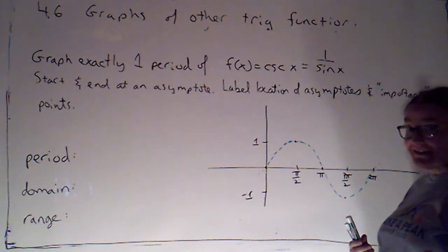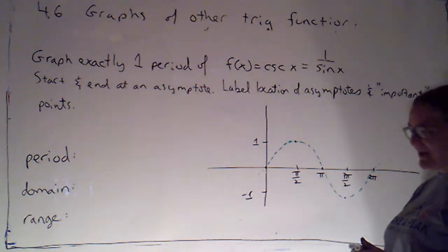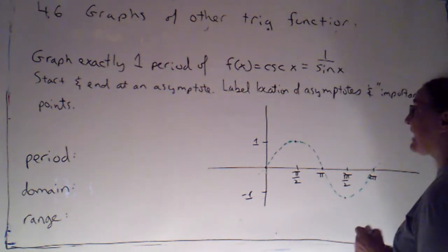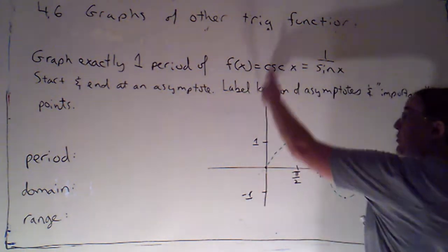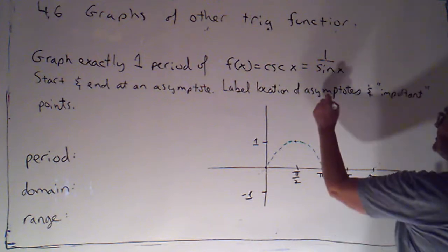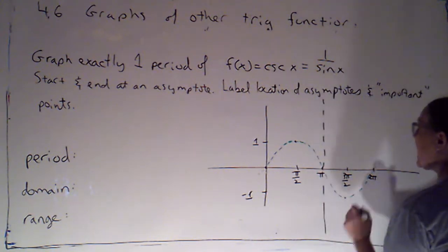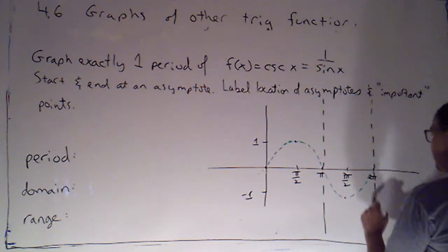And of course where sine is zero is where cosecant is going to be undefined and that's where we're going to have our asymptotes. So the y-axis will be an asymptote, we'll have an asymptote at pi, and we'll have an asymptote at two pi.